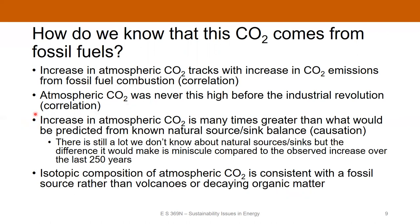Here's where we get into the causative nature of this. If we consider natural sources and sinks of carbon dioxide — which includes the ocean, weathering of silicate rocks, and volcanoes as a natural source — despite considerable uncertainty in our understanding of natural sources and sinks, the difference these sources and sinks would make is very, very small compared to the observed increase in CO2 over the past 250 years. It just can't be explained by natural source and sink balance. Most importantly, the isotopic composition of the atmospheric CO2 is consistent with it having come from a combusted fossil source rather than a natural process like volcanic activity or decaying organic matter.